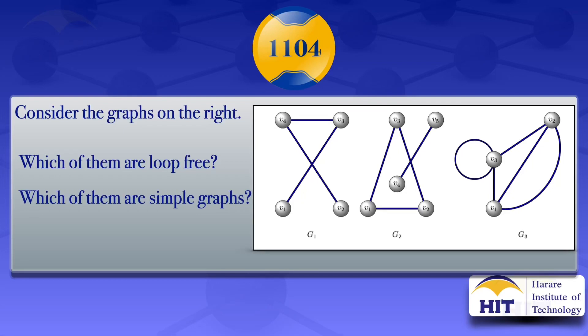Considering the three graphs appearing on the right - G1, G2, and G3 - in this tutorial I'm going to determine which ones are loop-free and then look at which ones are simple graphs.